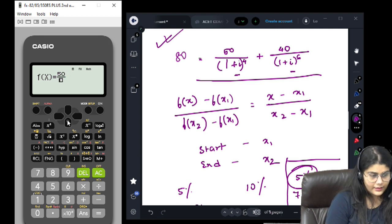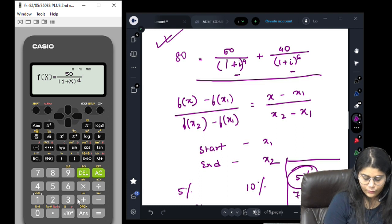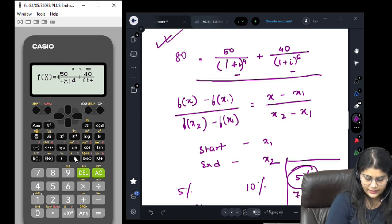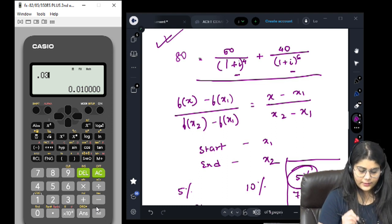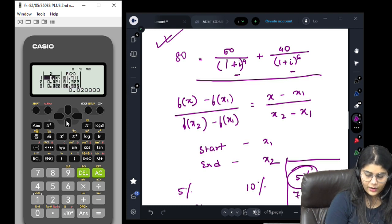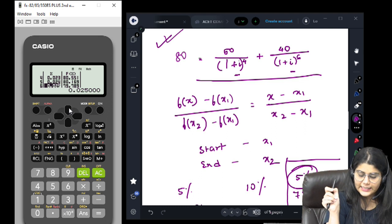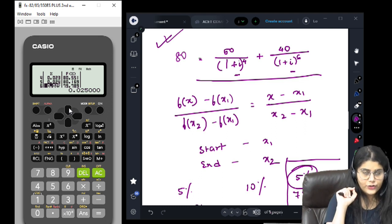50 divided by 1 plus x whole to the power 4, moving out, plus 40 divided by (1+x)^6. I am starting with 0.02, ending with 0.03, at a step of 0.001. Now we can see that at 0.024 the value is 80.169, and at 0.025 it is 79.7. Which means somewhere between 2.4% and 2.5% we got exact 80. Now let's try it out: 0.024 to 0.025, and now we will increase the step because we want a more accurate answer.